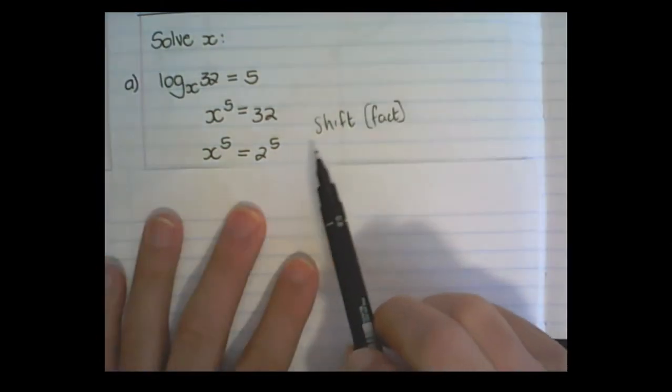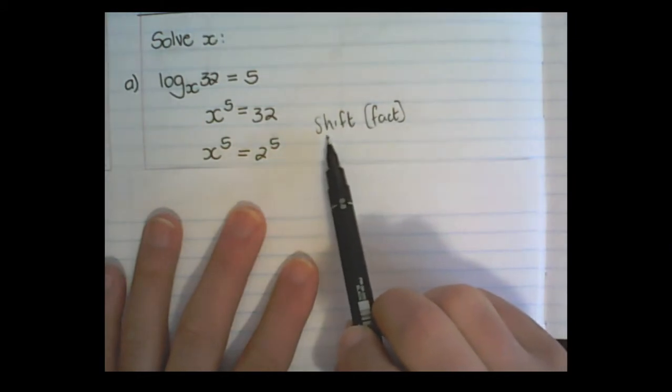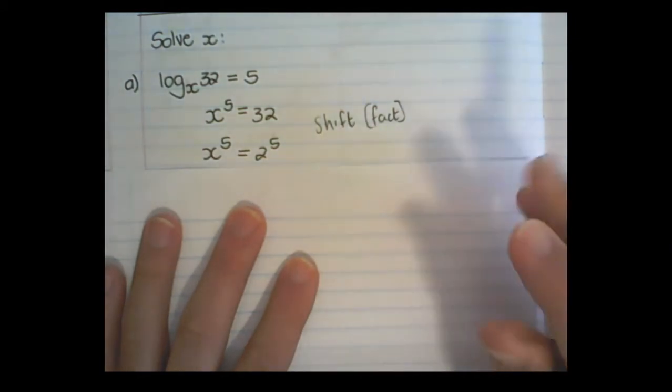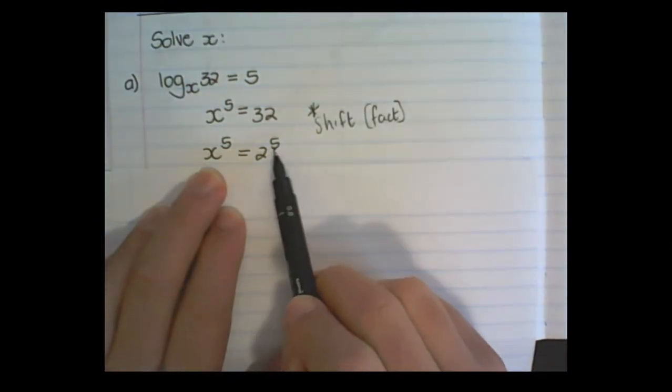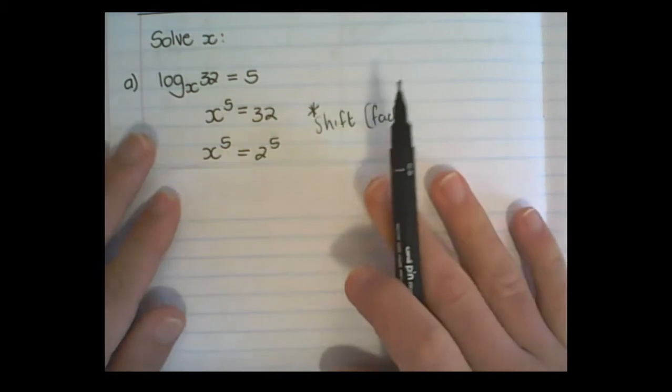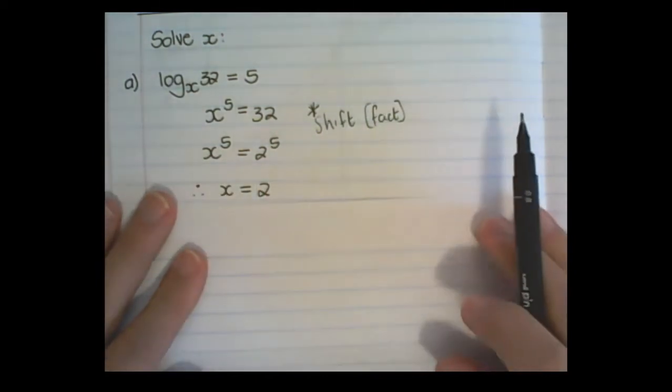And that will turn any number into a product of prime numbers. Now that I have the exponents are the same, I can ignore the exponents, and therefore x is equal to 2.